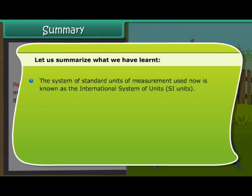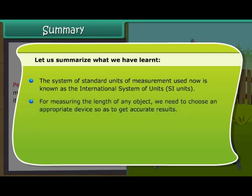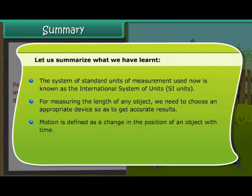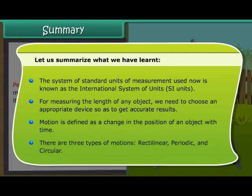The system of standard units of measurement used now is known as the International System of Units or SI Units. For measuring the length of any object, we need to choose an appropriate device so as to get accurate results. Motion is defined as a change in the position of an object with time. There are three types of motions: Rectilinear, periodic and circular.